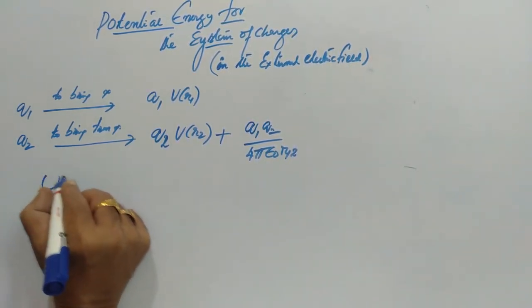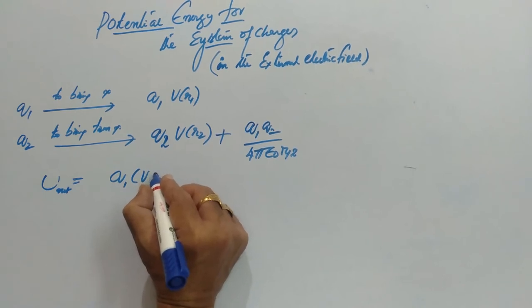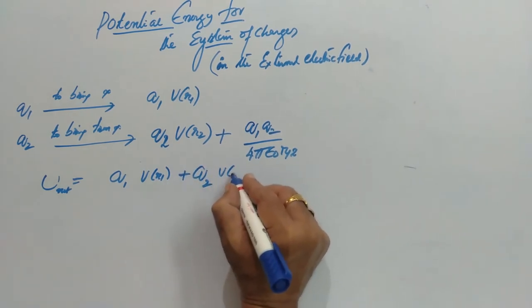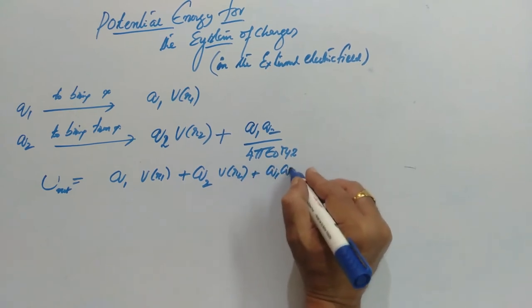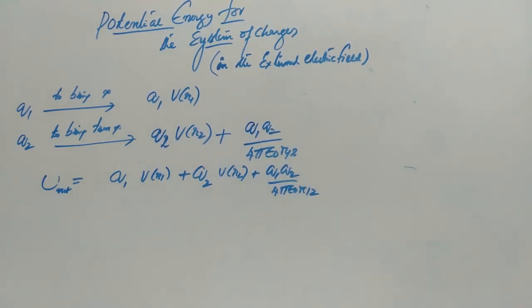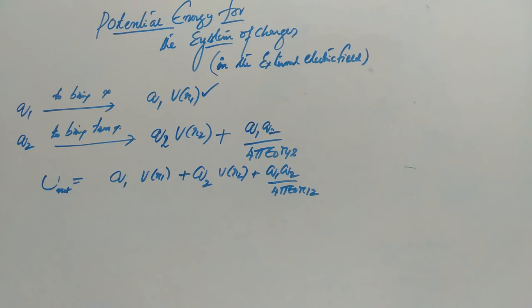Therefore, now the net energy U_net will be Q1 times V at R1 plus Q2 times V at R2 plus Q1 Q2 by 4π epsilon naught R12. So this is the energy required to assemble both charges in the presence of any external electric field. If you want to bring only one charge, the work done and potential energy is Q1 times V at R1.